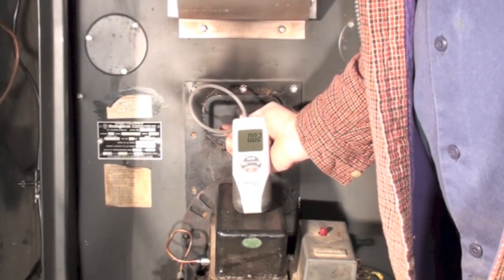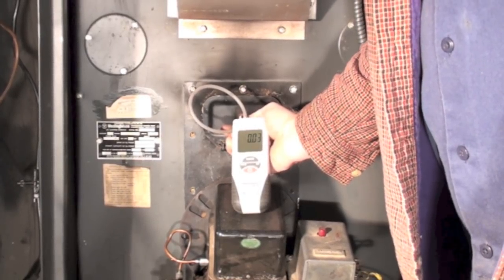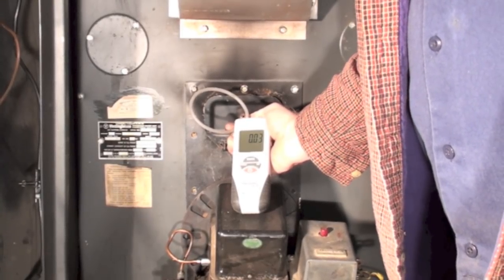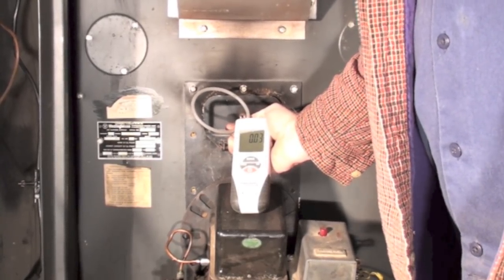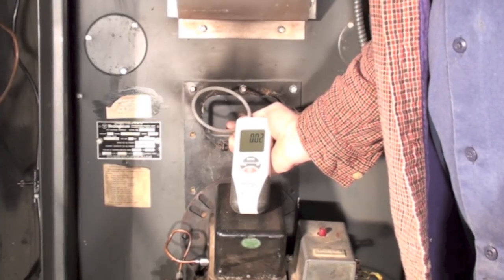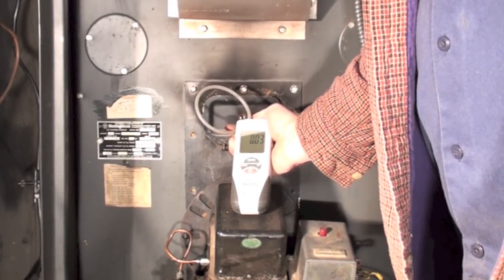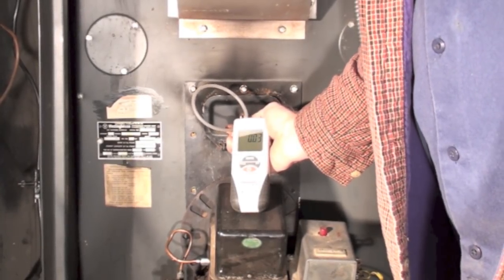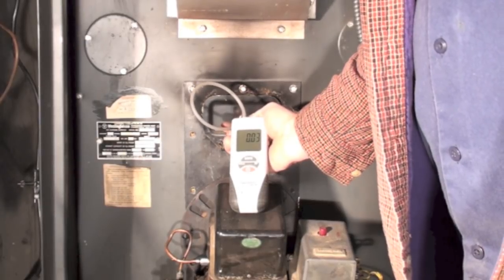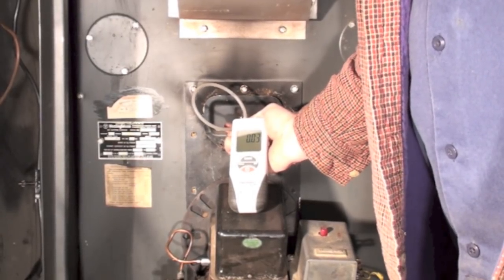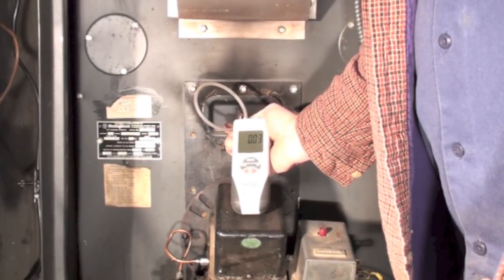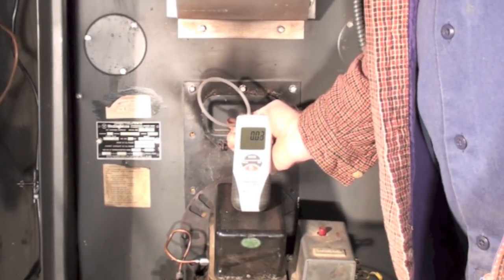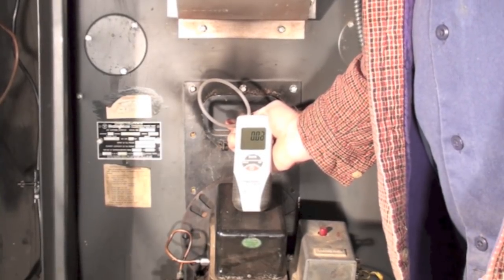What is that telling me? That's telling me that there is the proper amount of difference in negative draft between the firebox and the breaching. Breaching is just where the chimney comes out. Okay, the reason I've done this is if I had a very high number here - I mean a high difference - let's say I had a negative in my vent of 0.04...